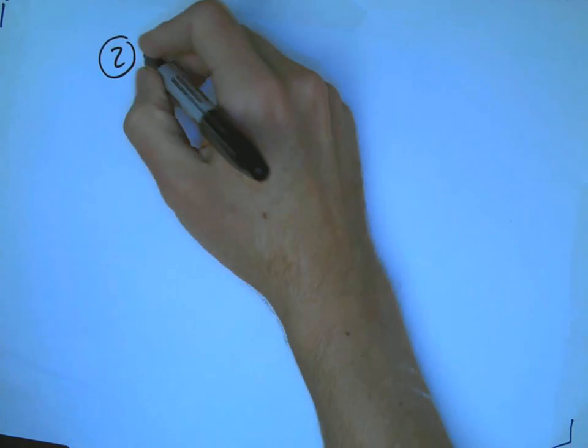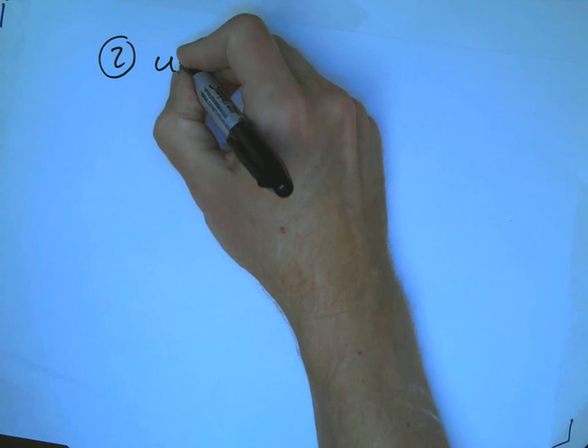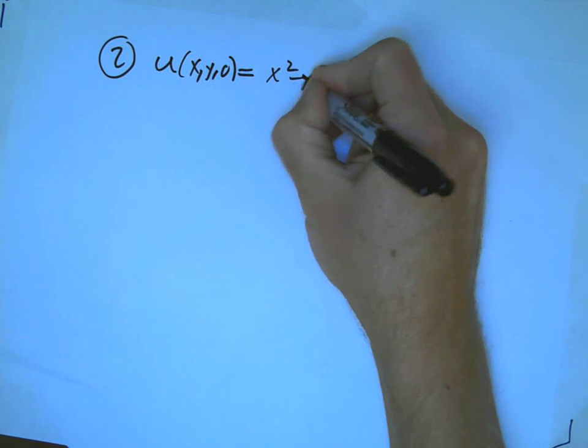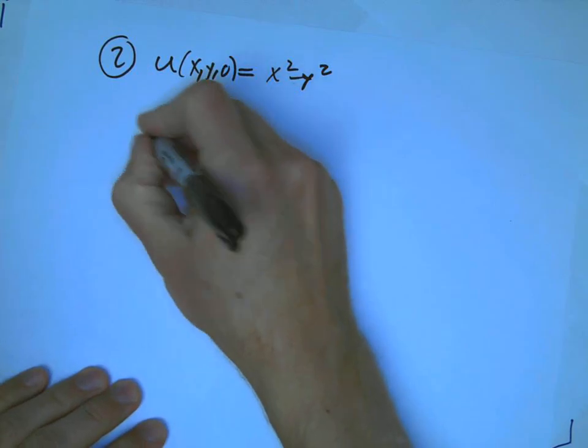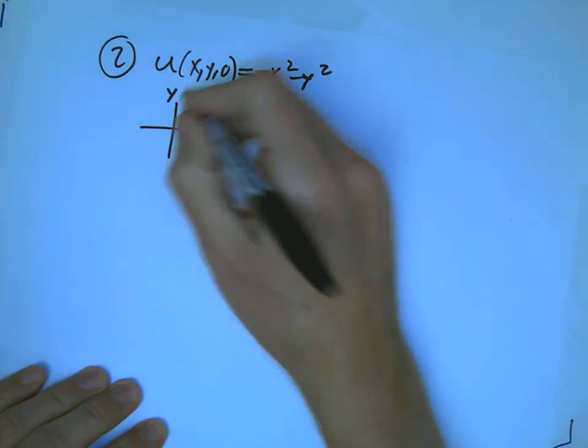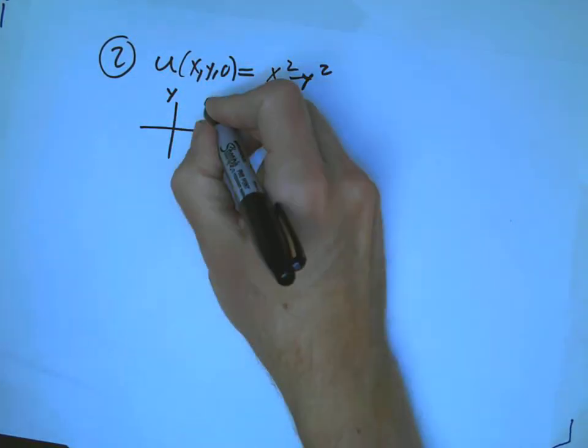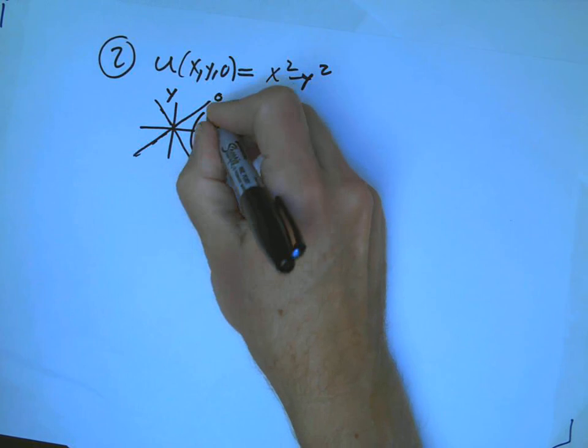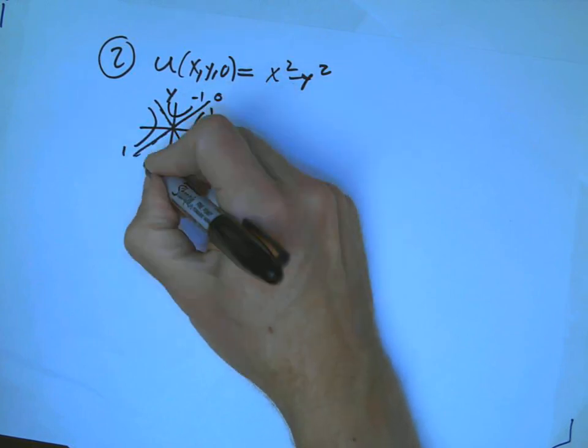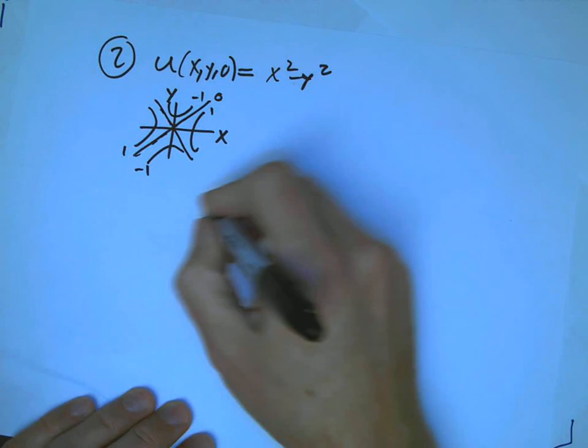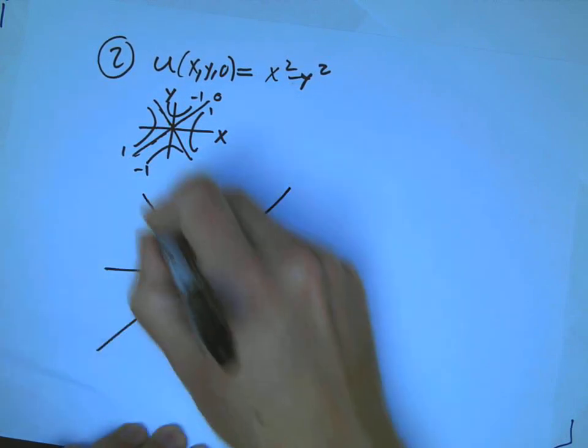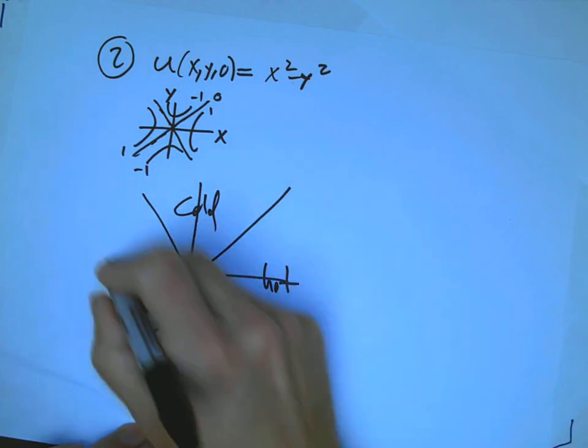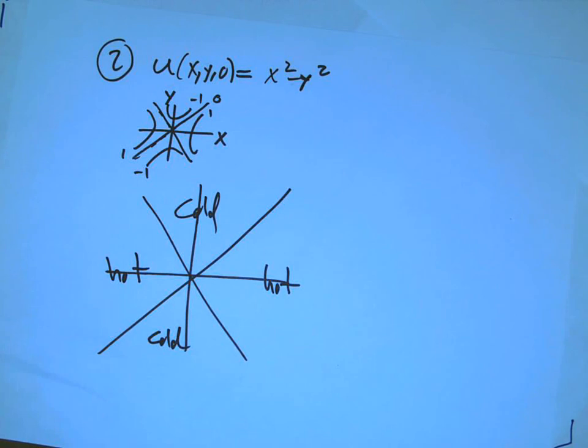Let's look at u(x,y,0) equals x² minus y². That's one of the standard saddles. And I'm going to look at the contour map. It's a lot easier to look at this with contour maps, as usual. And x² minus y², the 0 contour is like this. And here's 1. And here's minus 1. So it's cold here, cold here, hot here, hot here, and medium along the axis.